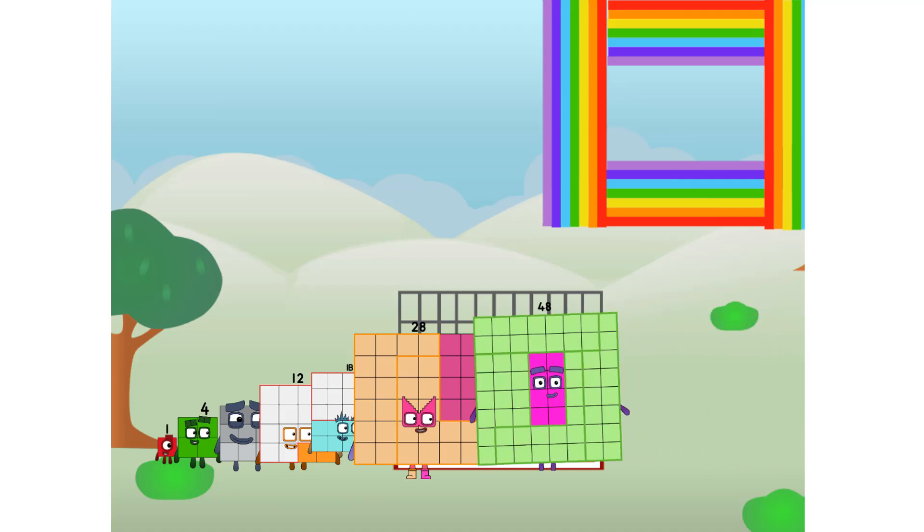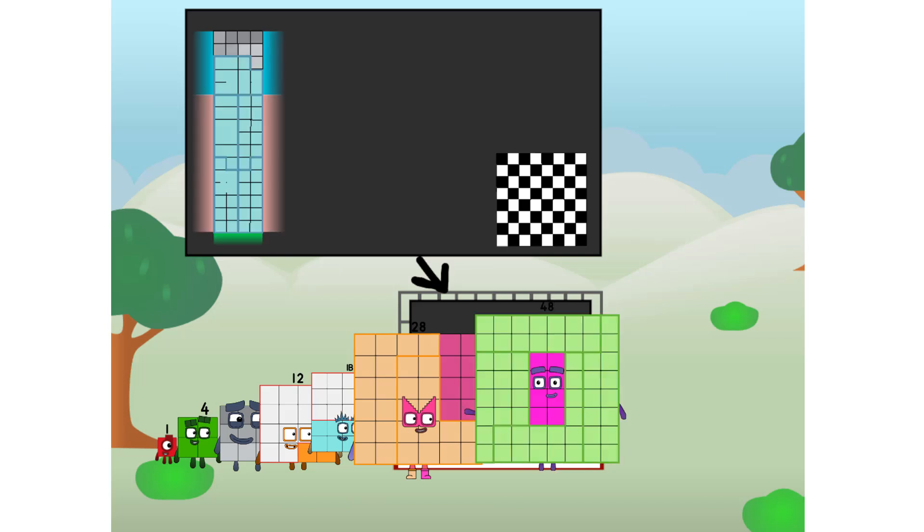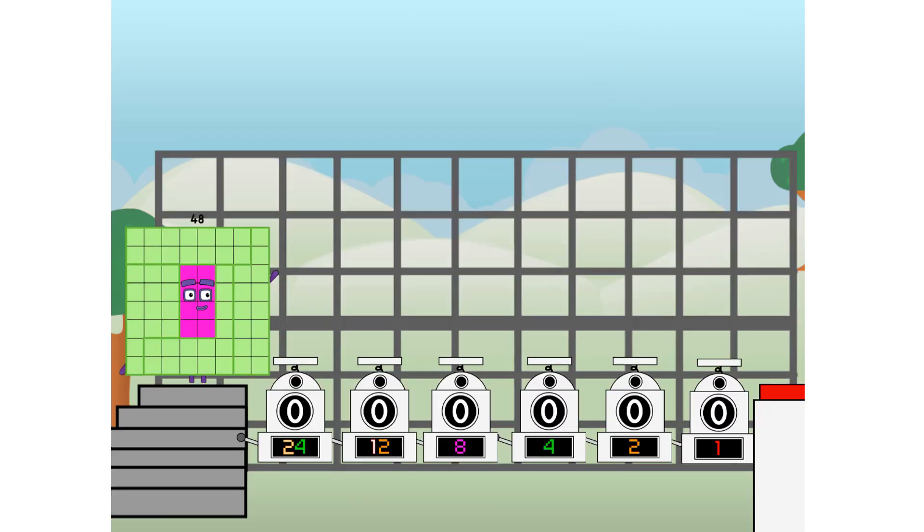There you are. This way. I've got so much to show you. I am 48, and I can be a strong square, a chessboard, a super rectangle, eight octoblocks, or even a super cube. But today, I want to show you a little trick I call binary boosters.